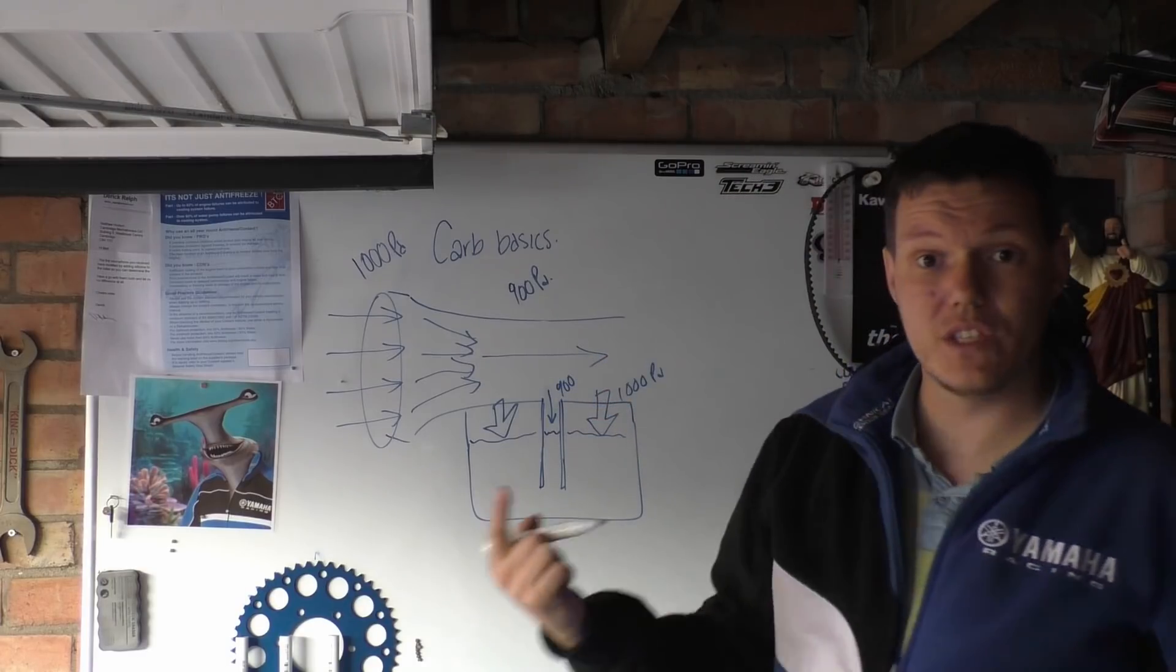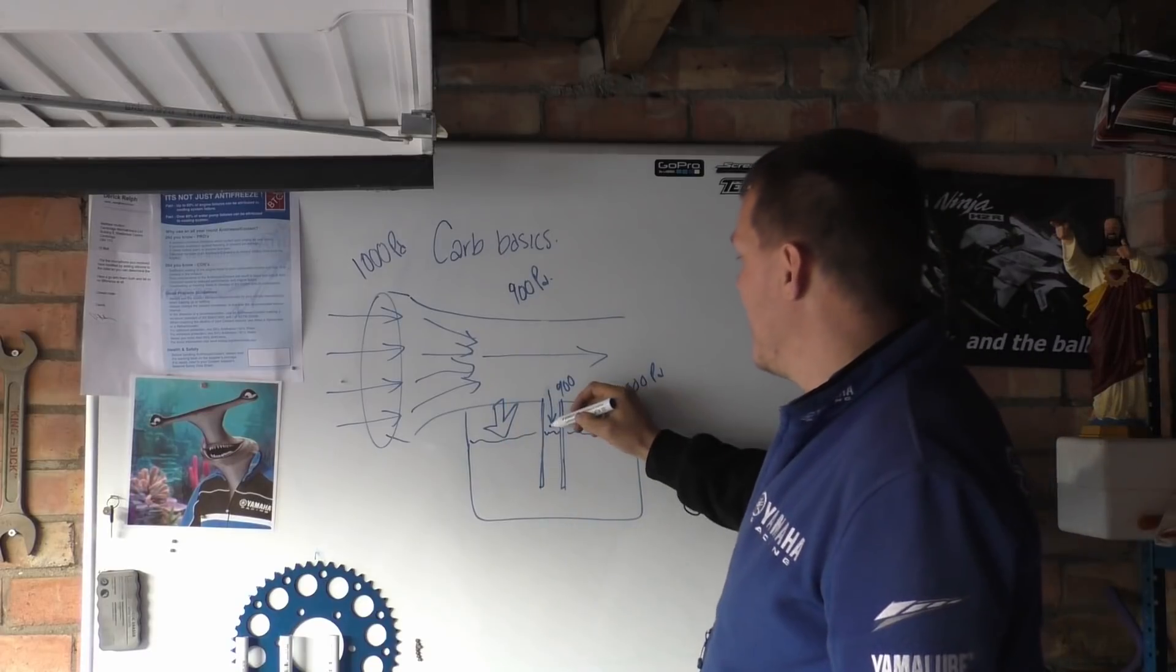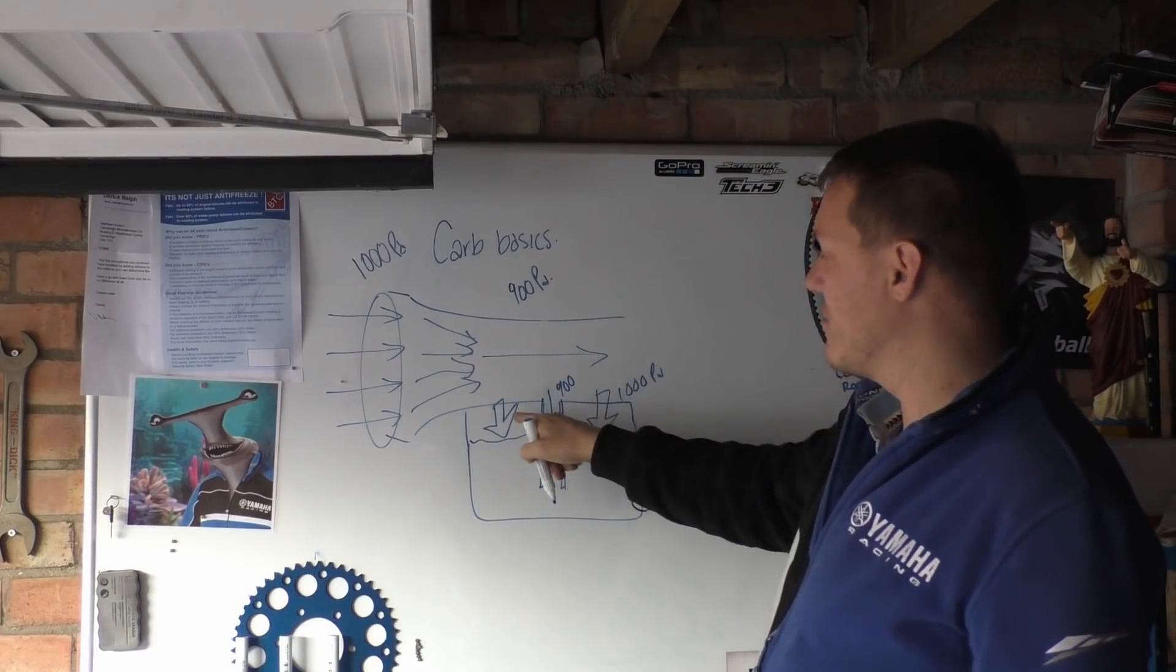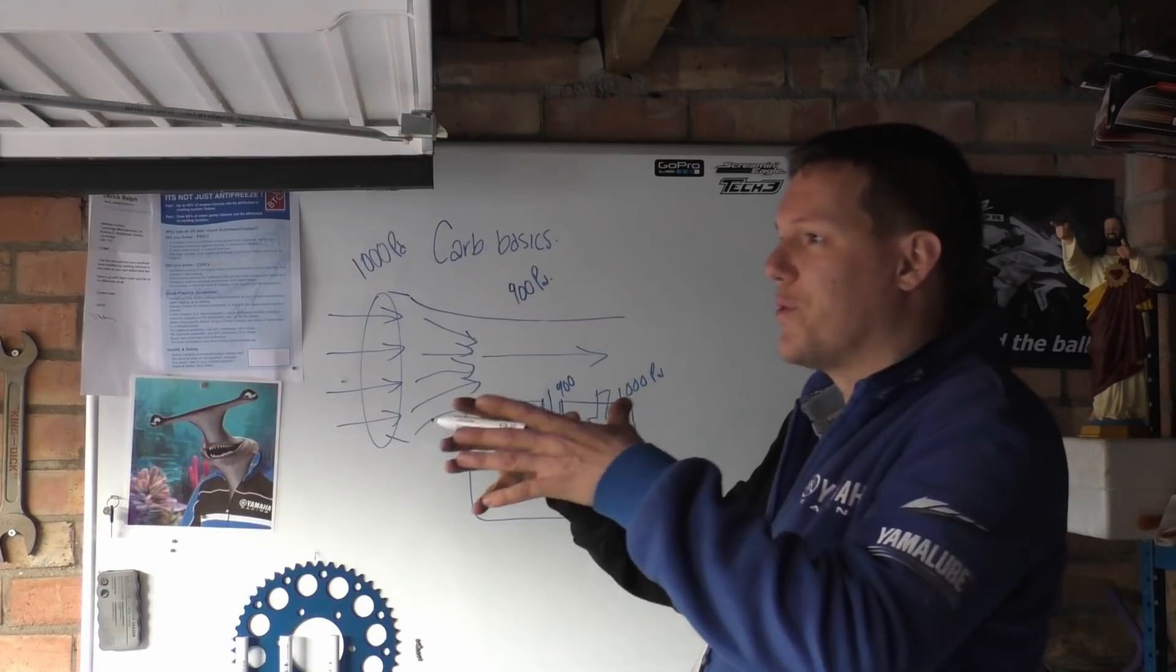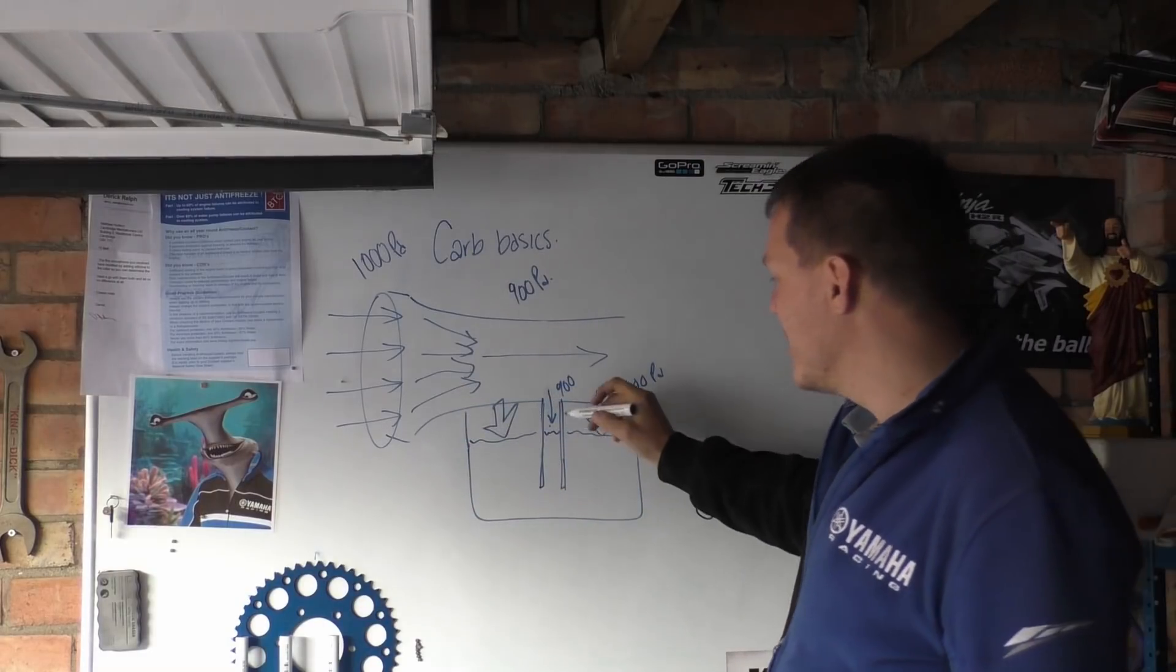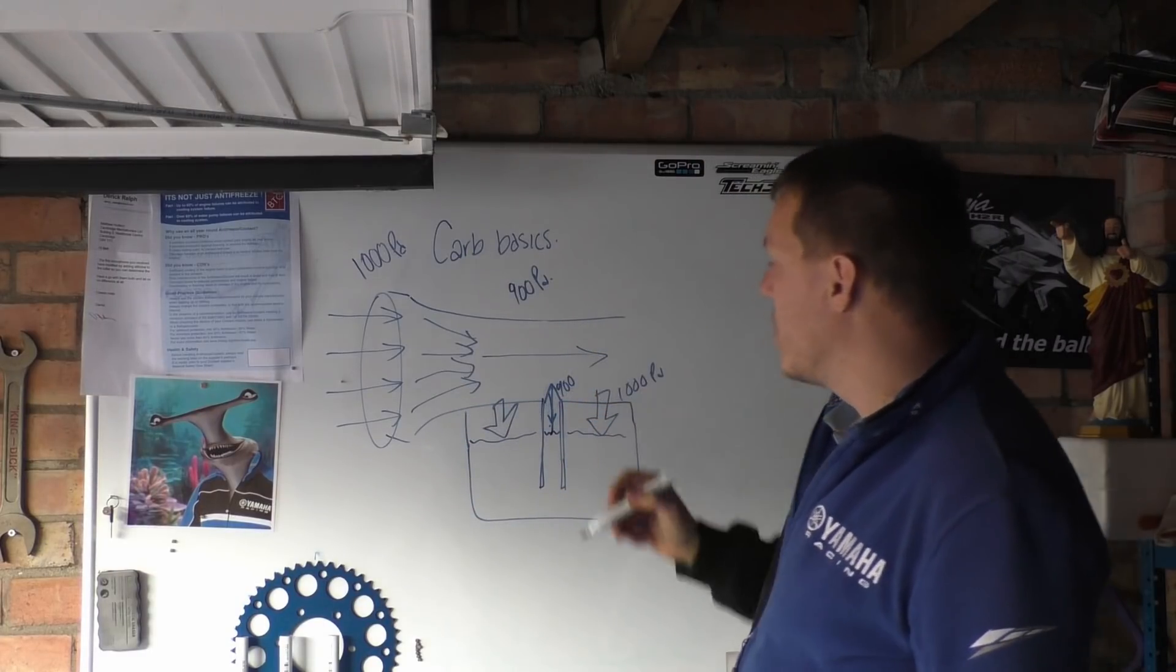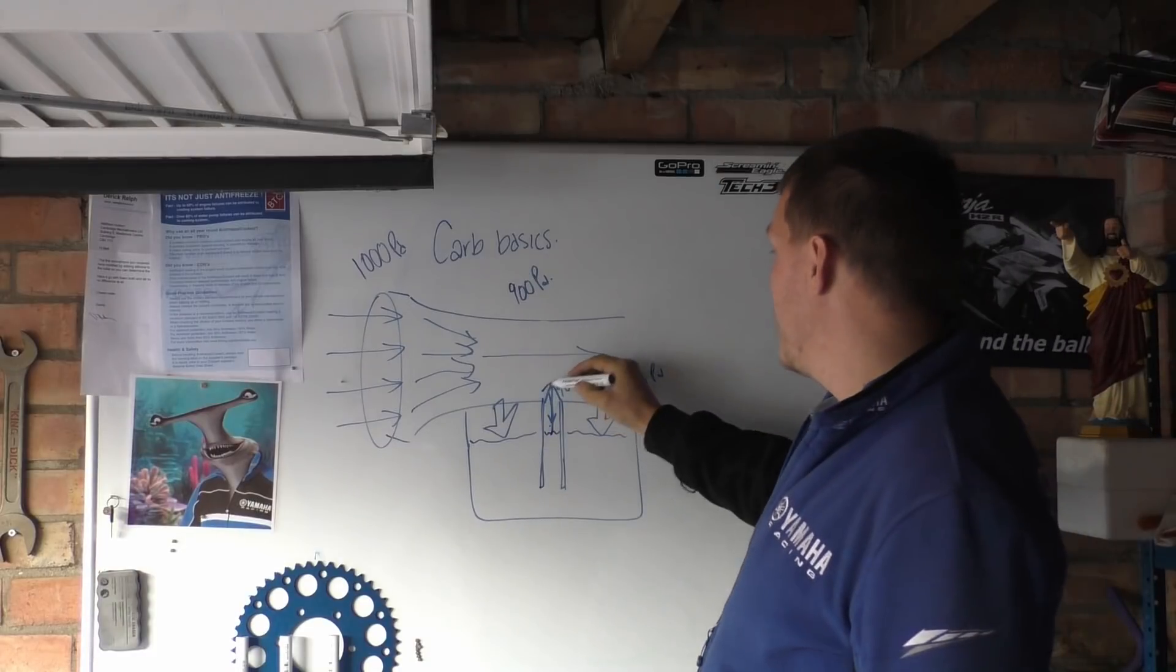So obviously it's going to squirt up, because there's more force on the outside of the fuel in the fuel bowl, on the outside of this tube than there is in the tube. So the fuel actually goes up and goes up into the stream.